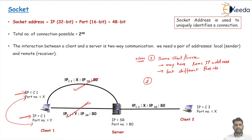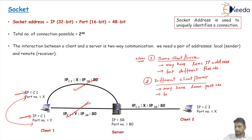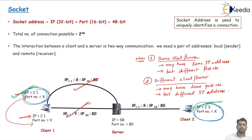Note two: different client and server machines may have the same port number but different IP addresses. Two different machines may have the same processes running in them but different IP addresses, because the IP address is the address of a machine or host within the network. Here you see the same port number X on both clients, but different IP addresses — IP address C1 and IP address C3.